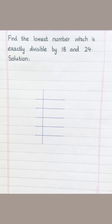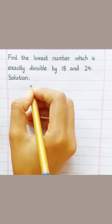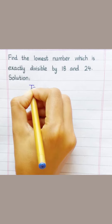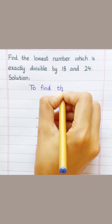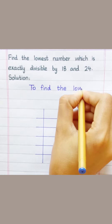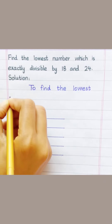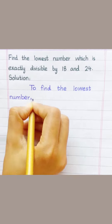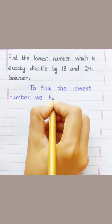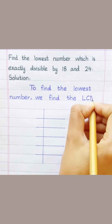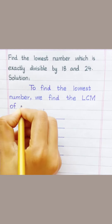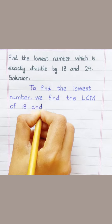Find the lowest number which is exactly divisible by 18 and 24. To find the lowest number, we find the LCM of 18 and 24.